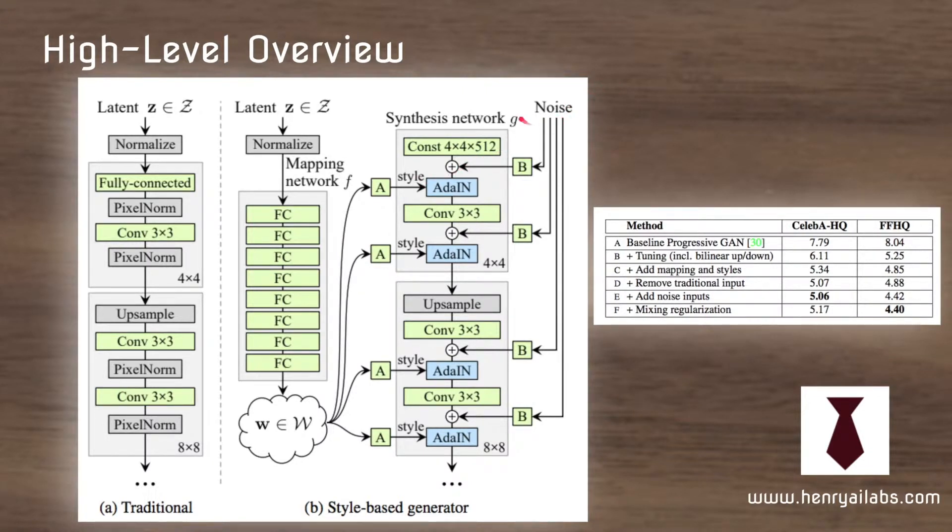So another detail is they add some Gaussian noise and they just concatenate it with intermediate features. And then this chart over here is just a FID chart which is an evaluation metric that's supposed to be highly correlated with diversity in generated images and it just shows how the miscellaneous things they added to the StyleGAN from the progressive GAN is able to increase the diversity of these generated facial images.